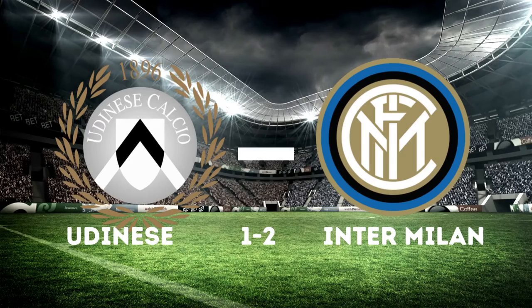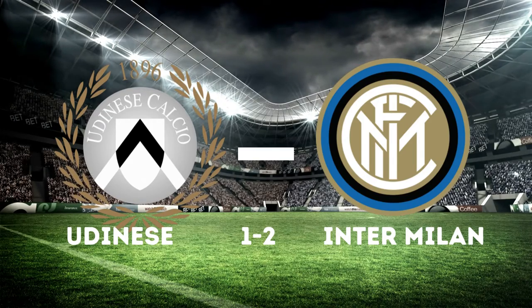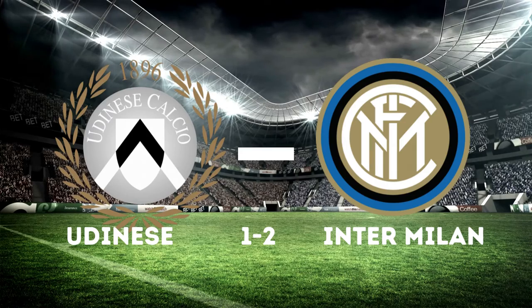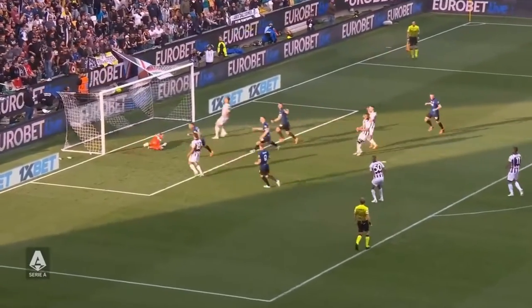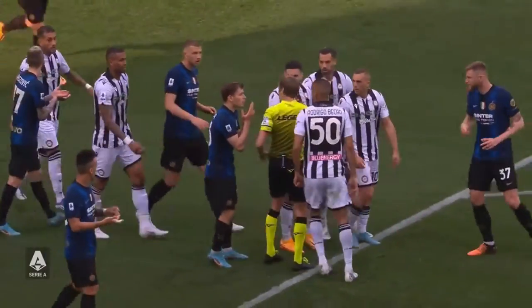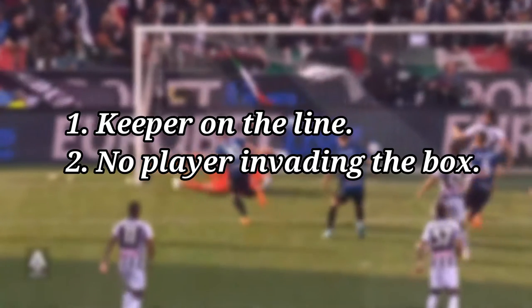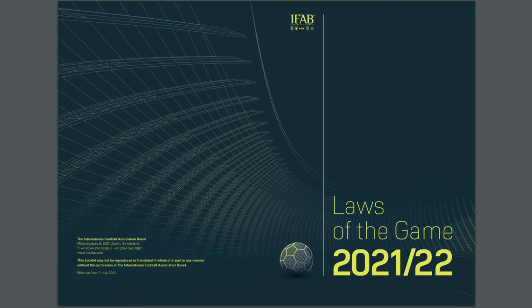Recently in the match of Inter Milan vs Udinese, a penalty was awarded to Inter Milan. Lautaro Martinez was going to take the penalty. He blasted it onto the left post and turned the rebound into the goal — looked like a routine penalty to me. Suddenly the referee went to the VAR to verify something. The keeper had one foot on the goal line, no other player was invading the penalty box before the penalty was taken. So what was wrong? What was the VAR approached for?